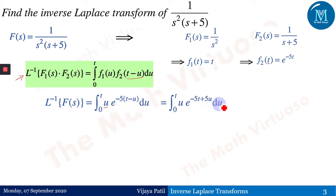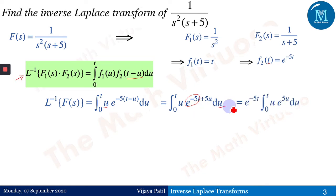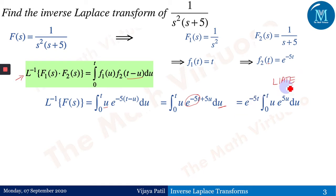Since u is the variable of integration, e^(−5t) is a constant and comes out of the integral. So we have e^(−5t) times the integral from 0 to t of u·e^(5u) du. Now we apply the LIATE rule for integration by parts: algebraic function u is first, exponential e^(5u) is second.